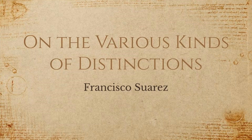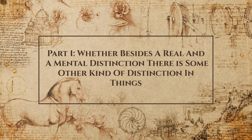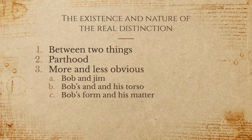Part 1: Whether besides a real and a mental distinction, there is some other kind of distinction in things. First, the real distinction. The existence and nature of the real distinction is just between any two things. These will always form parts if they're composed together. If you find them in the same thing, they'll both be parts of that thing rather than simply aspects or ideas about the thing.